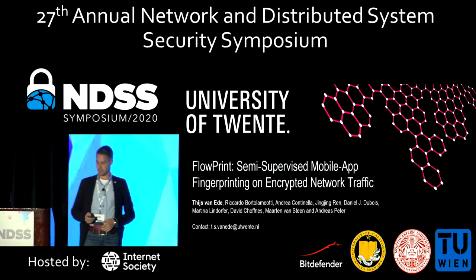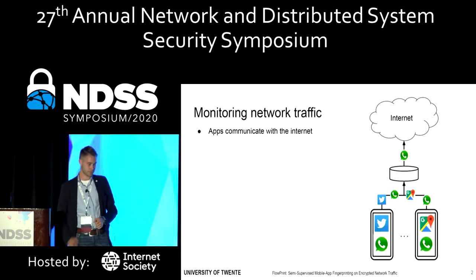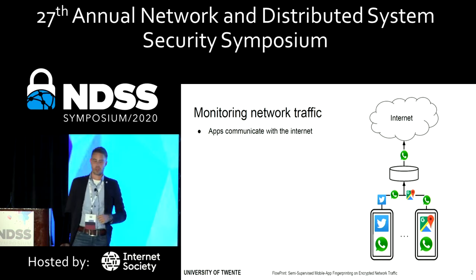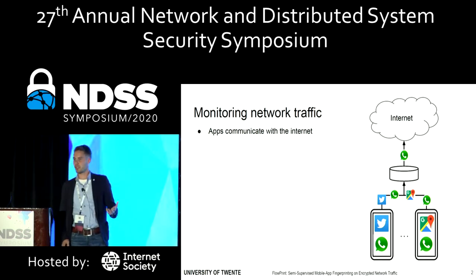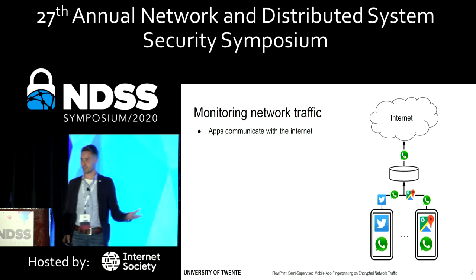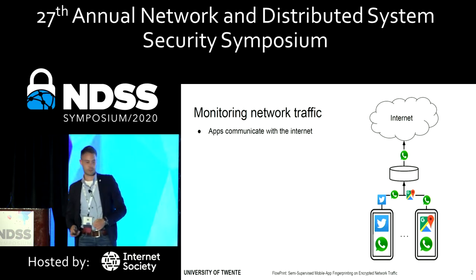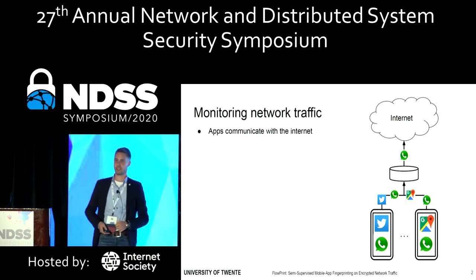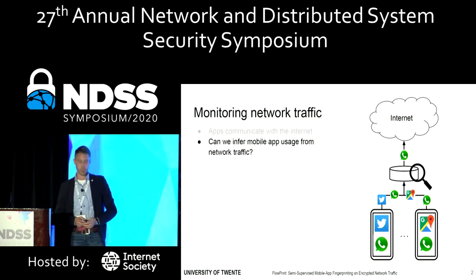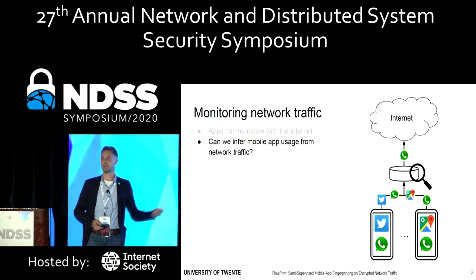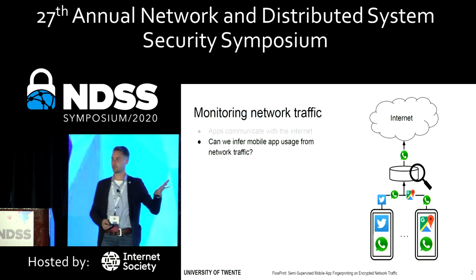Let's look at what we have done in the paper. We've looked at different mobile applications, and what we've seen is that many of these applications communicate over the internet. The question we asked ourselves is: suppose that we are a network operator and we look at the network traffic going past — can we distinguish by just looking at the network traffic which mobile applications are active on the devices within our network?